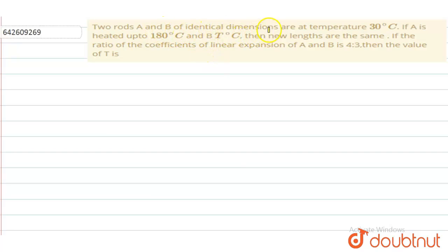A and B of identical dimensions are at temperature 30 degree celsius. If A is heated up to 180 degree celsius and B is heated up to